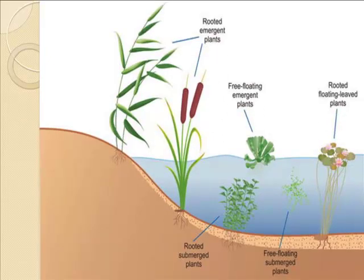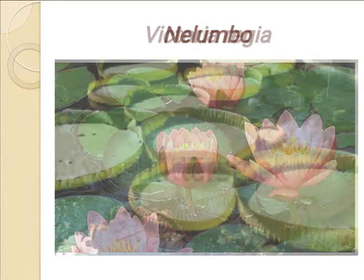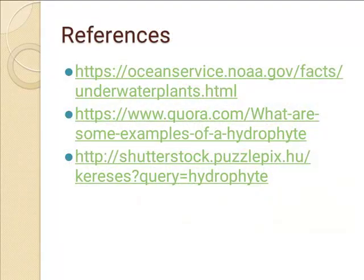This picture also indicates the pond ecosystem — here you can clearly see floating, submerged, rooted submerged, rooted floating, and rooted emergent hydrophytes. This is lotus, and this is Victoria regia, which has the largest leaves. These are all the references. Thank you for watching this video.